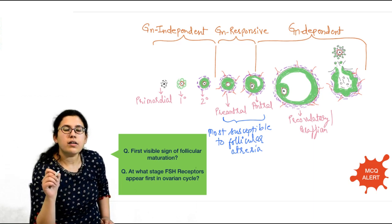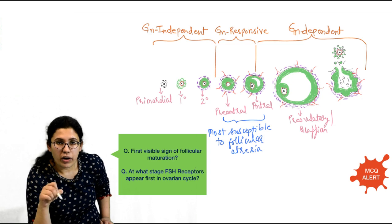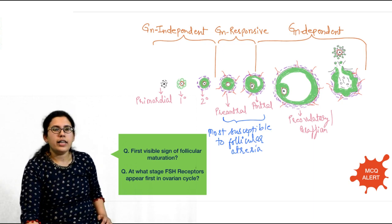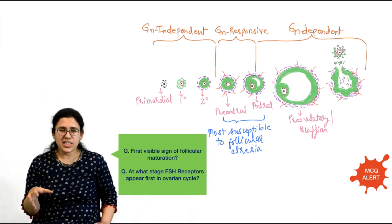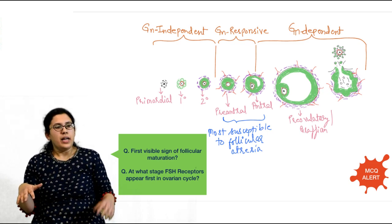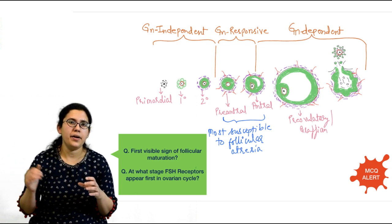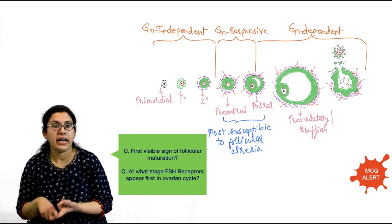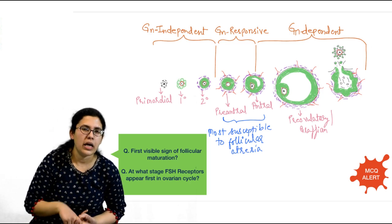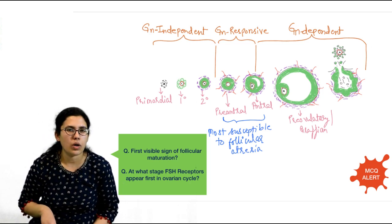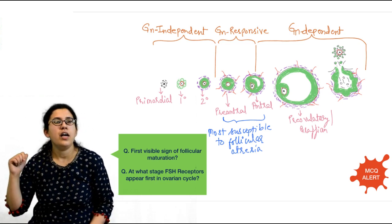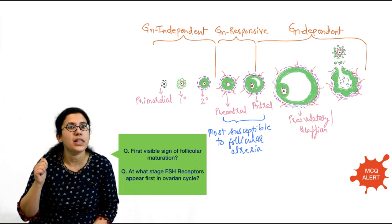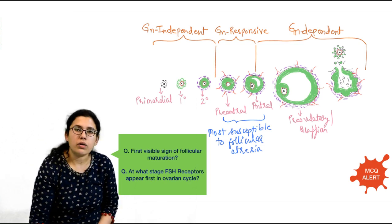The oocyte also secretes a glycoprotein layer around it called zona pellucida. When fertilization happens, once one sperm has entered and fertilized the egg, zona pellucida inhibits the entry of all other sperm — it prevents polyspermy. There are three types of protein in zona pellucida: ZP1, ZP2, and ZP3. It is ZP3 which the sperm detects — this is an important MCQ point.